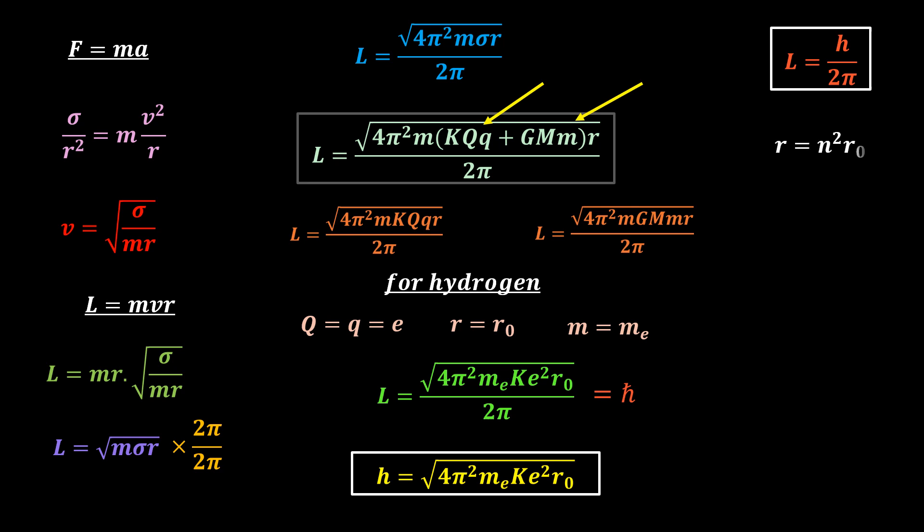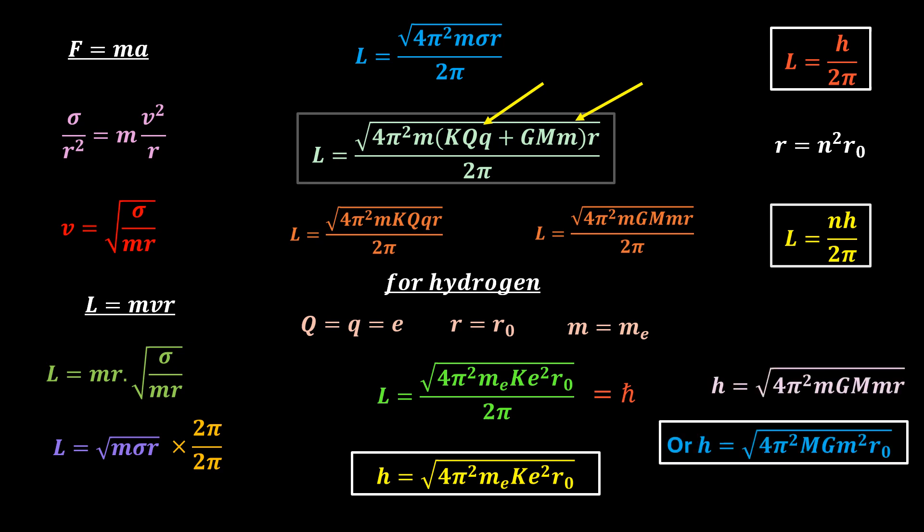If you let R equal to n squared R0, we get the more general equation L equal to nh over 2 pi. The same argument can be made if mass dominated instead, in which case h will be this.